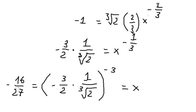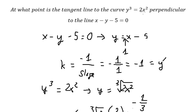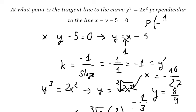Now that we have the x value, we go back to the original equation and find the value of y, which is 8/9. So we can write the final answer: the point is (-16/27, 8/9). That is the end. Thank you for watching.